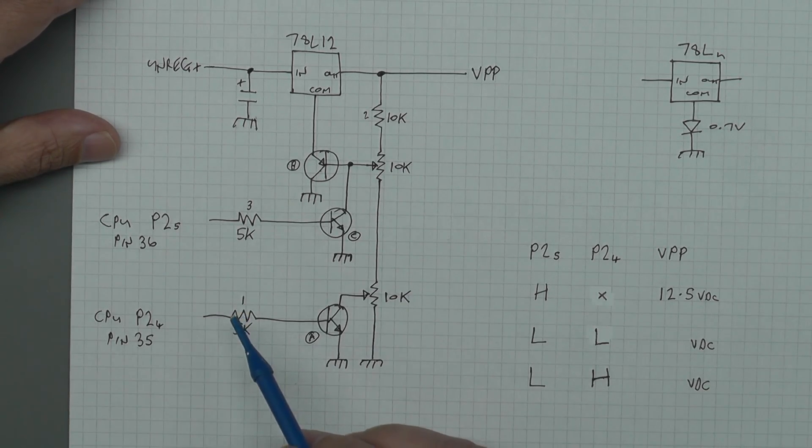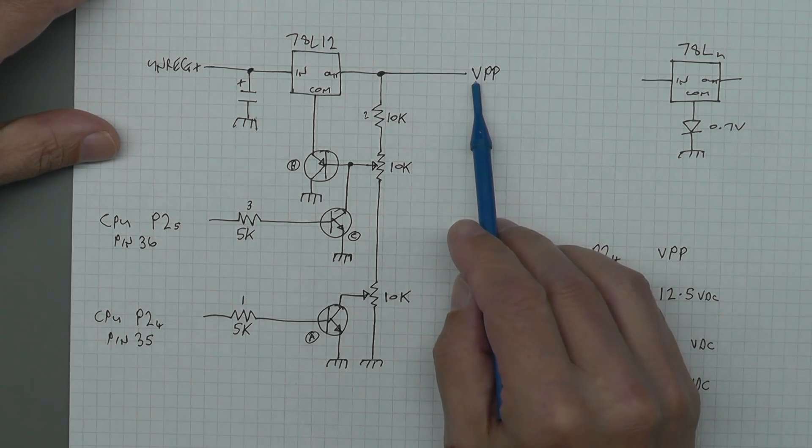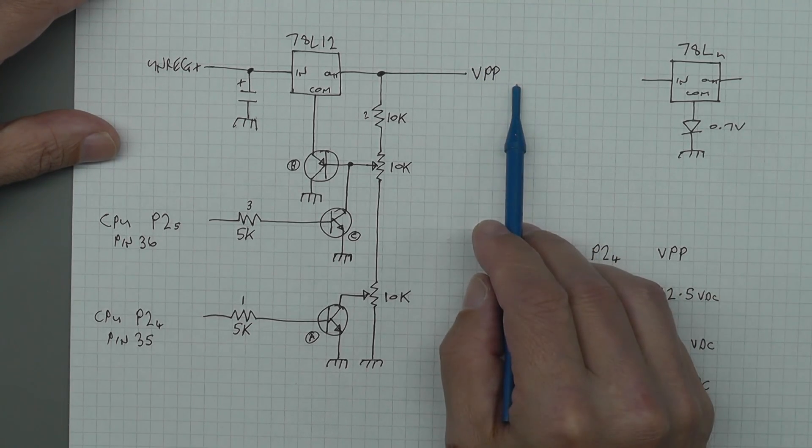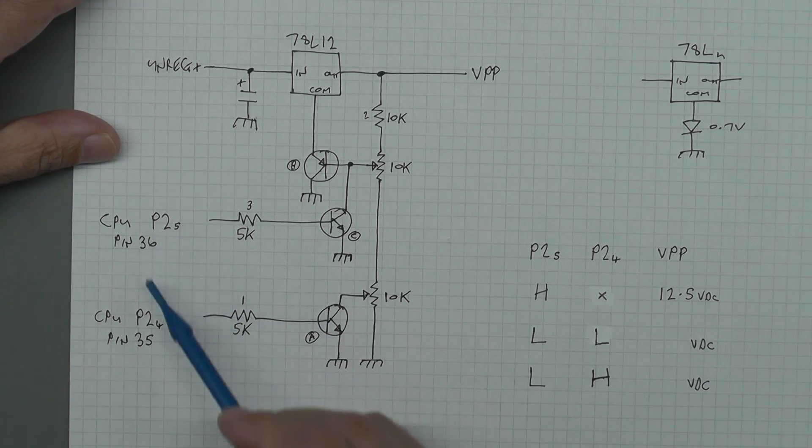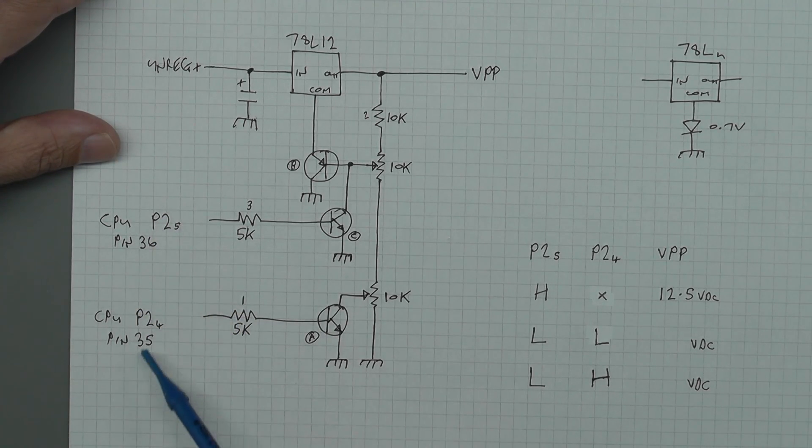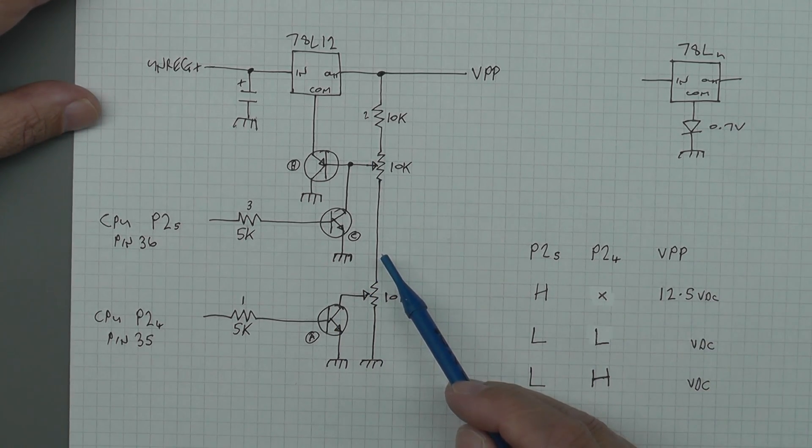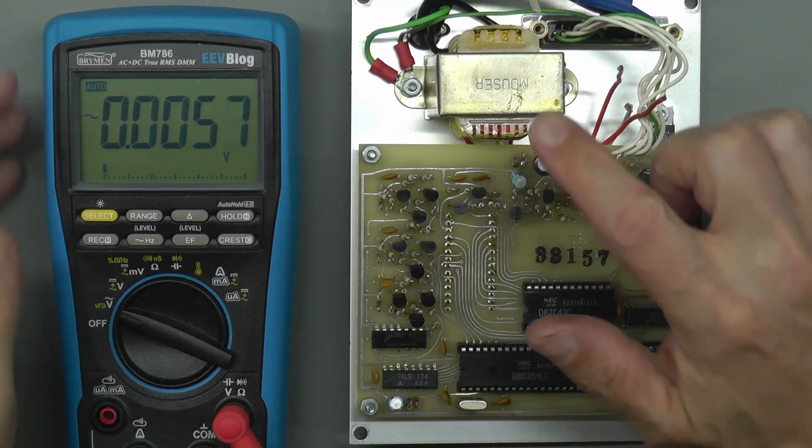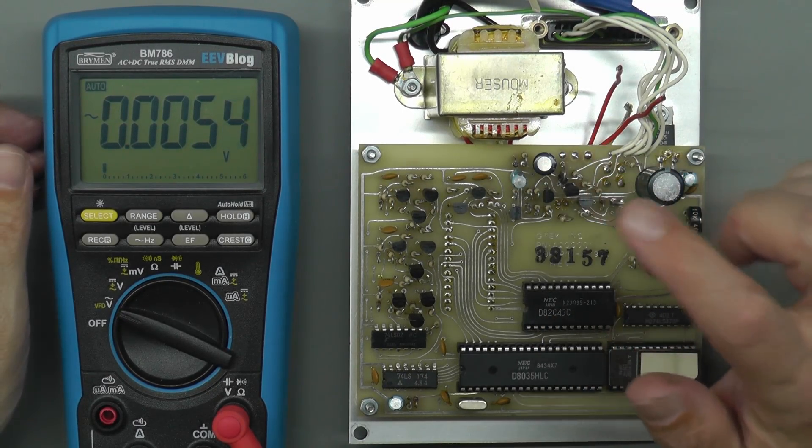So overall, what you're able to get out in VPP is three different voltages depending on the state of these two digital IO lines. So a little truth table shows exactly how that's working, and I haven't filled in the voltages for VPP for that second and third option because they are subject to the position of the potentiometers. That's how I think it works anyway. So let's remove the transformer and fit the new one.